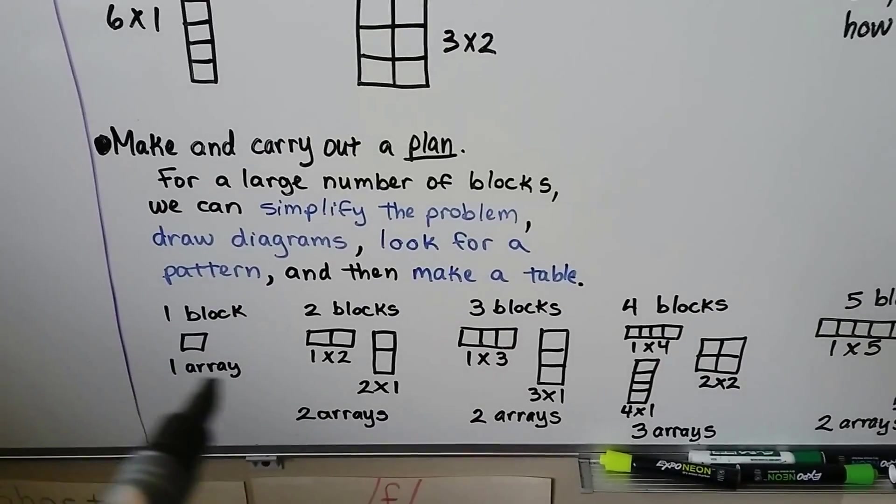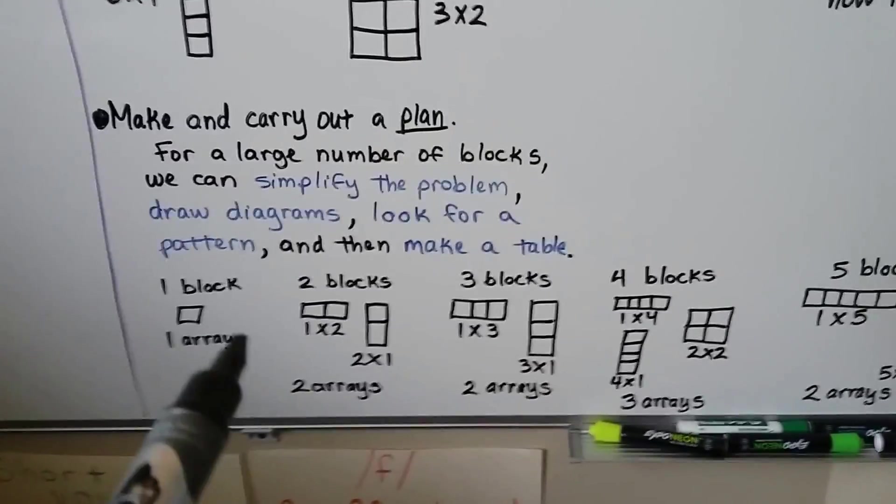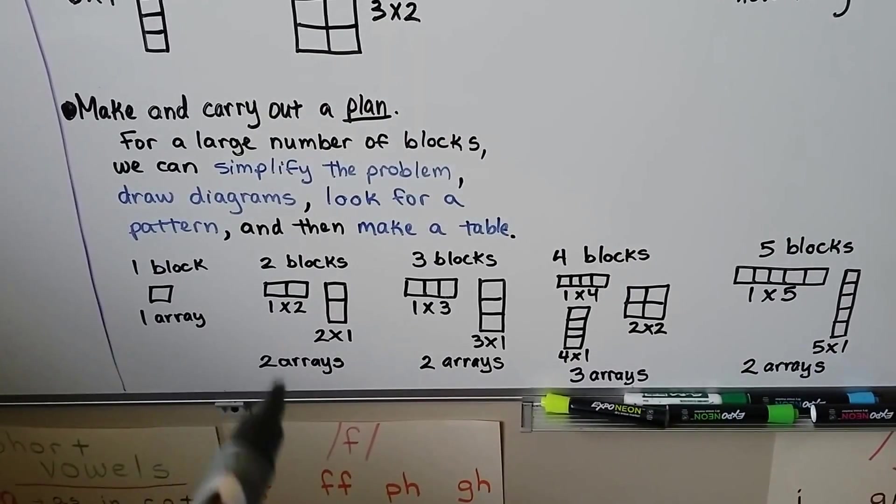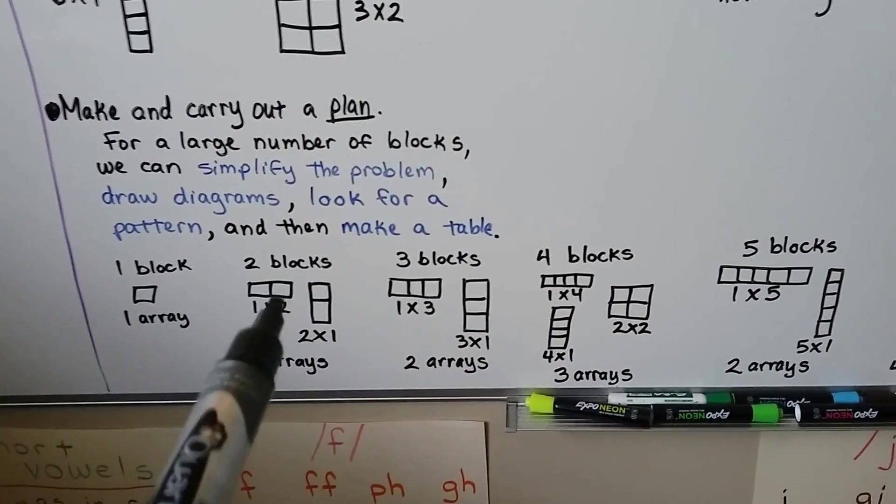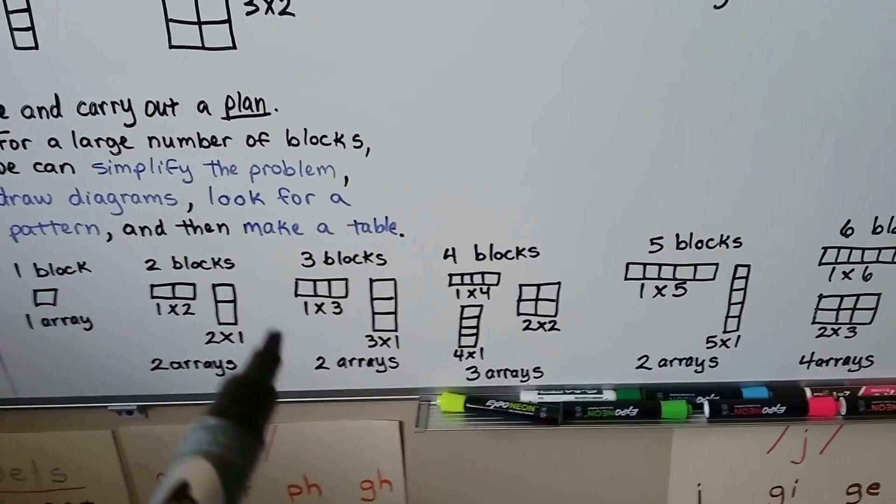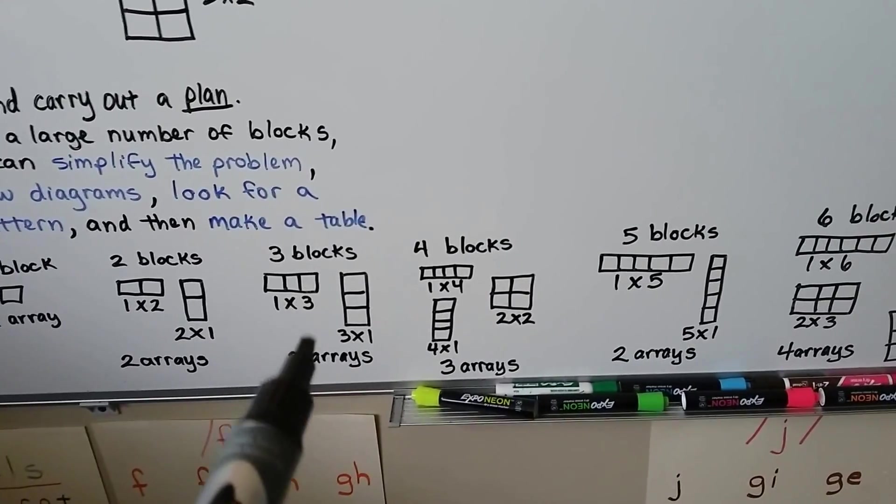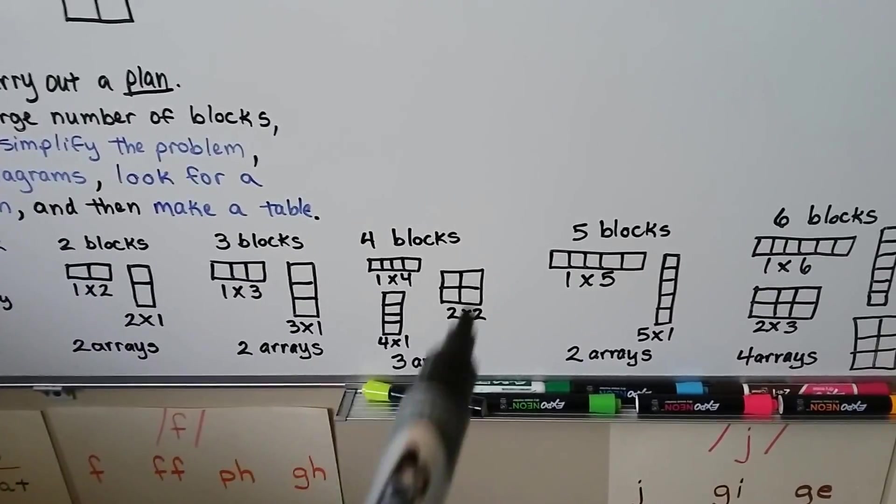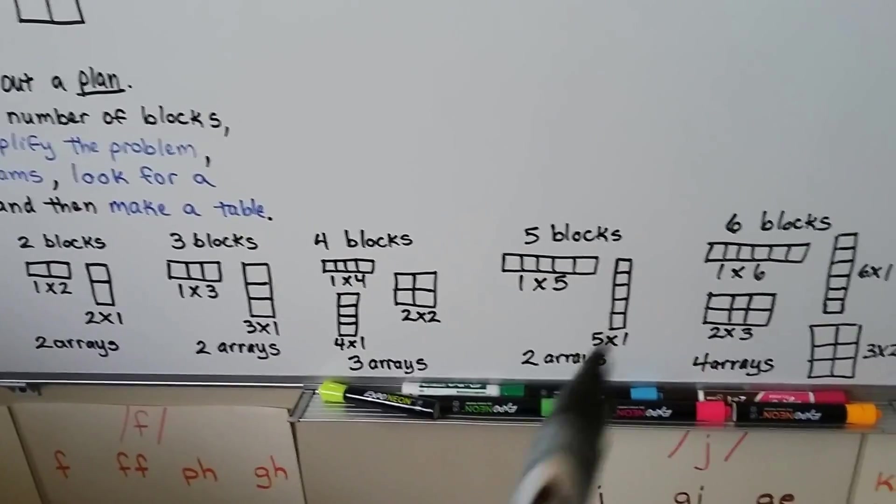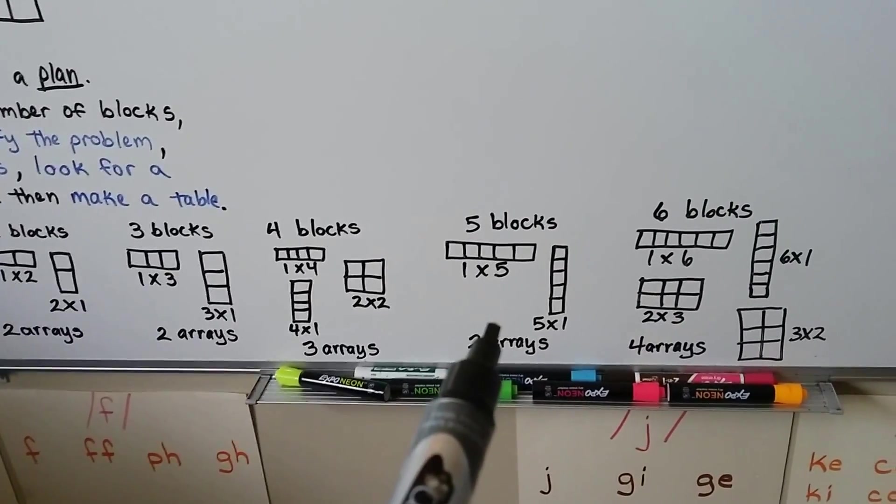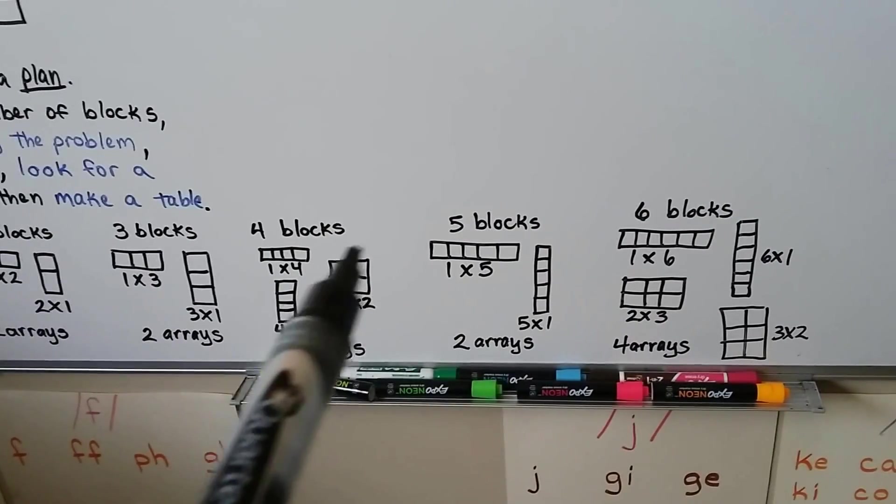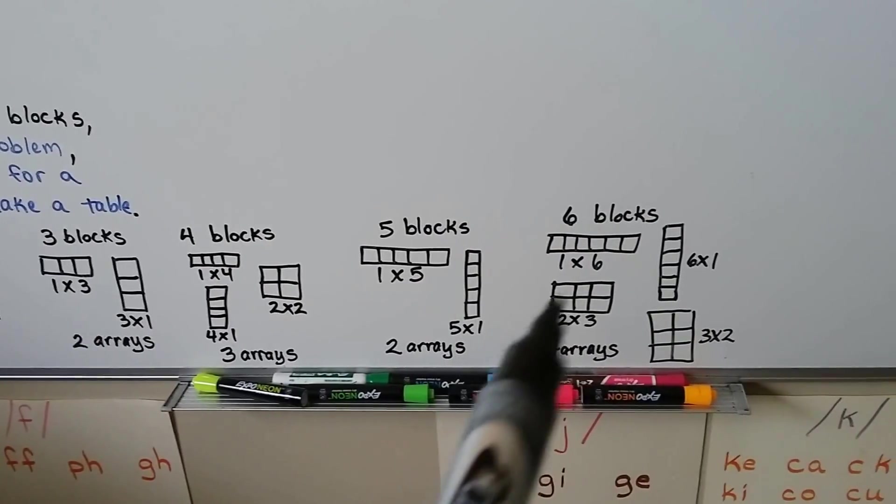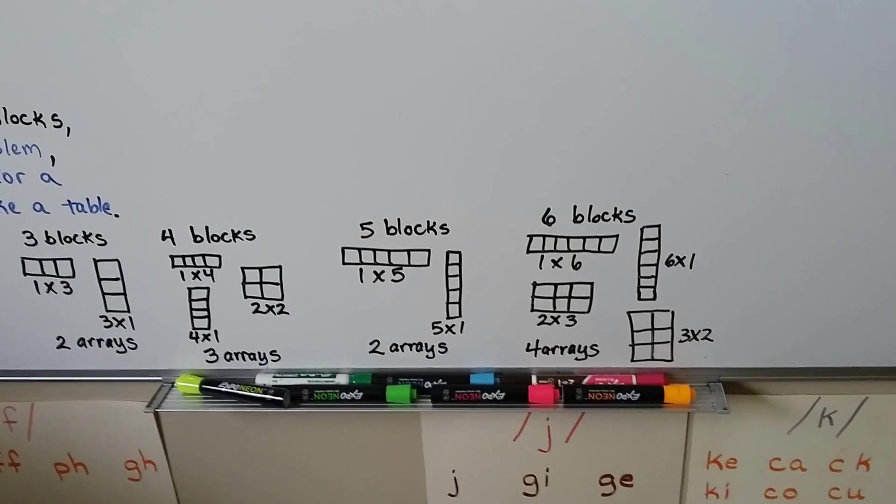If we look for a pattern from our diagrams that we draw, here's one block that makes a 1 by 1. 2 blocks, we get 2 arrays, a 1 by 2 and a 2 by 1. For 3 blocks, we get 2 arrays, a 1 by 3 and a 3 by 1. For 4 blocks, we get 3 arrays. For 5 blocks, it goes back down to 2 arrays because it's an odd number. We can't make a nice square. It needs to be a rectangular array. For 6 blocks, we end up with 4 arrays.